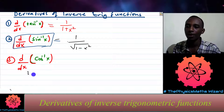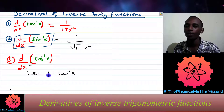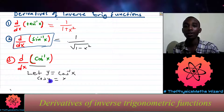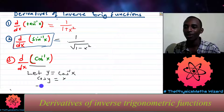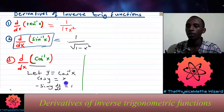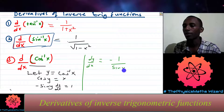Now let's do the last one. I will let y equal arccos of x, and I'll apply cosine to both sides. So cosine of y equals x. Taking derivatives, the derivative of cosine is negative sine y, and applying the chain rule with respect to x gives negative sine y times dy/dx equals 1. So dy/dx equals negative 1 divided by sine y.